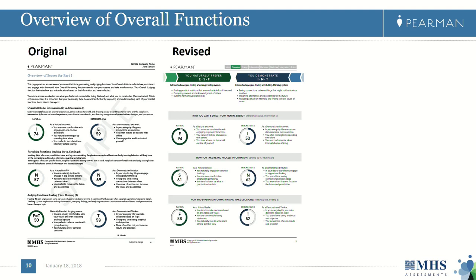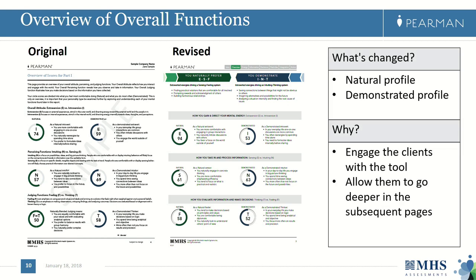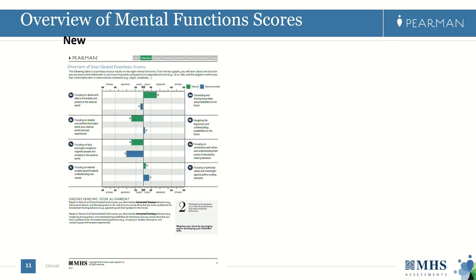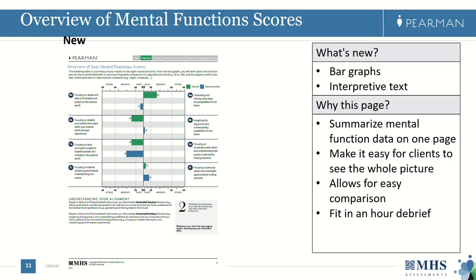For the overview of overall functions, what is new is we added the combination of natural letters and demonstrated letters on top of the page. At the bottom of these combinations there are three bullet points that explain what each combination means. The reason behind this is to engage clients with the tool at the beginning of the report and let them go to the details in subsequent pages if they choose to. We also created a completely new page — the overview of mental function scores — which summarizes all of the mental function data on one page so clients can see the whole picture and coaches can access all key points easily.